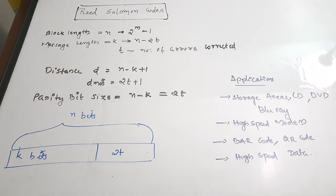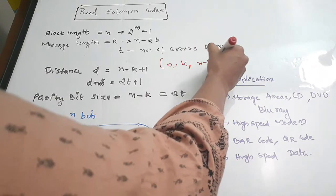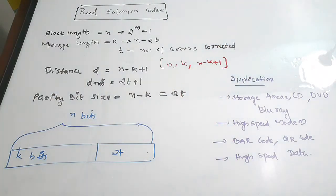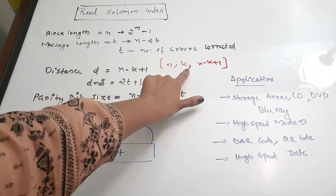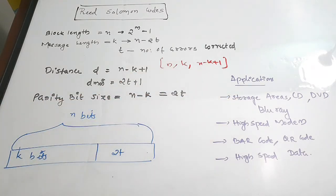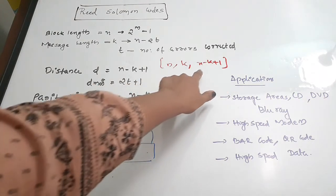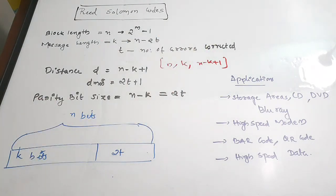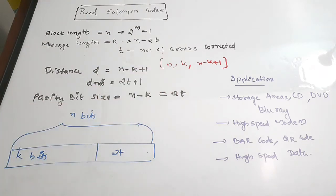A Reed Solomon code can be represented as (n, k, n minus k plus 1), where n is the code length, k is the message length, and n minus k plus 1 is the minimum distance. Alternatively you can write 2t plus 1 in terms of errors corrected. These are the important equations and this is how you represent a Reed Solomon code.